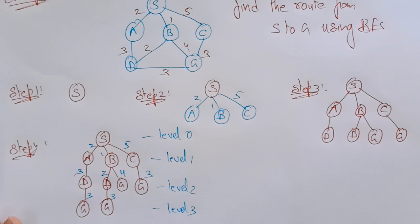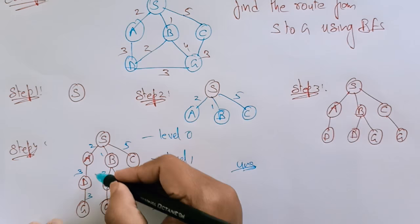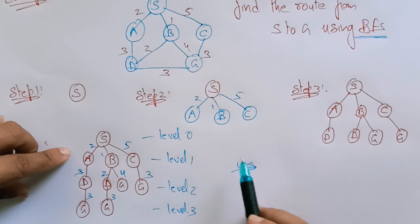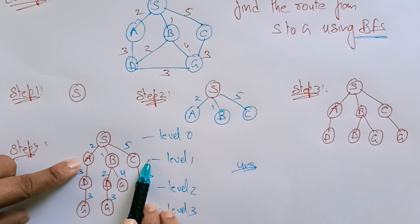Now I want to find the route from S to G. Which path I need to take? I have to choose using breadth first search. What is breadth first search? You have to visit all the nodes in that level.